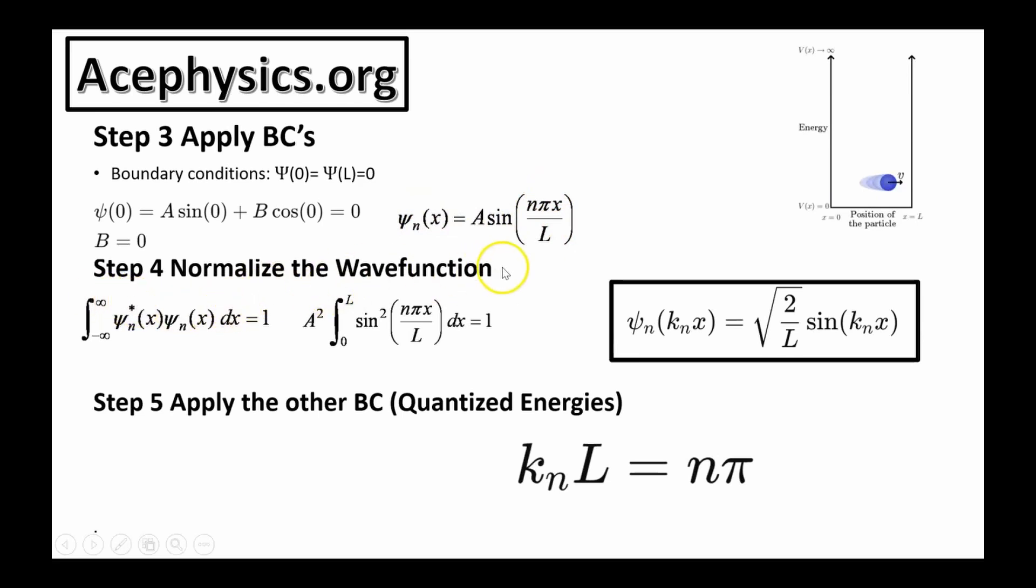Step four is normalizing the wave function. The wave function squared is equal to the probability of finding the particle. What the normalization means is if I look for the particle everywhere in space, there has to be 100% chance that I find it. It has to be somewhere, and so if I look for it everywhere, I will find it. You take the integral of psi squared, and that has to equal to one, and that means there's 100% chance of finding the particle if you look for it everywhere.